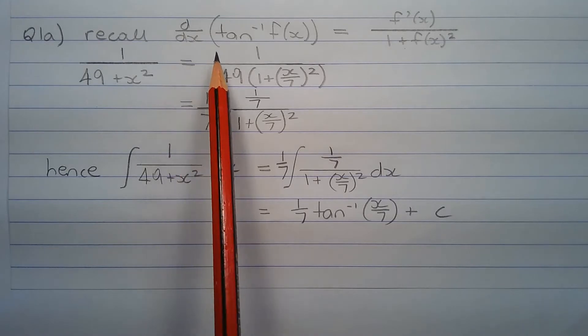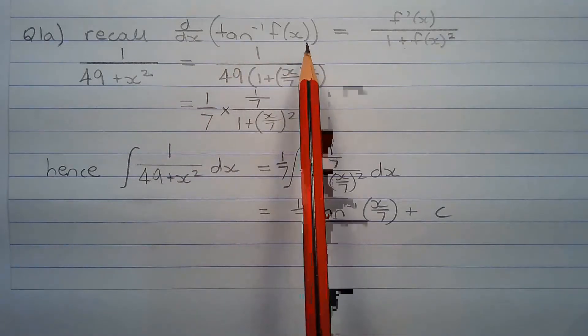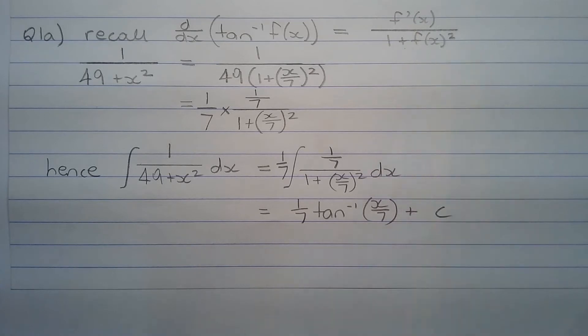Recall that the first derivative with respect to x of inverse tan of f(x) by the chain rule is f'(x) over 1 plus f(x) squared.